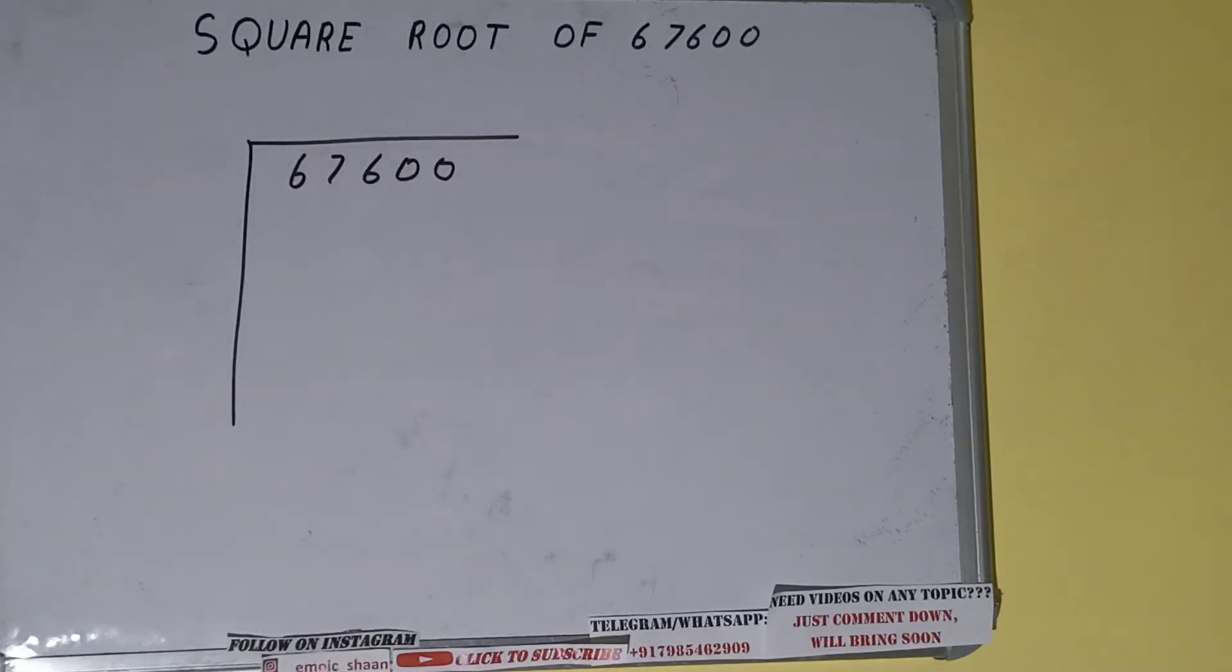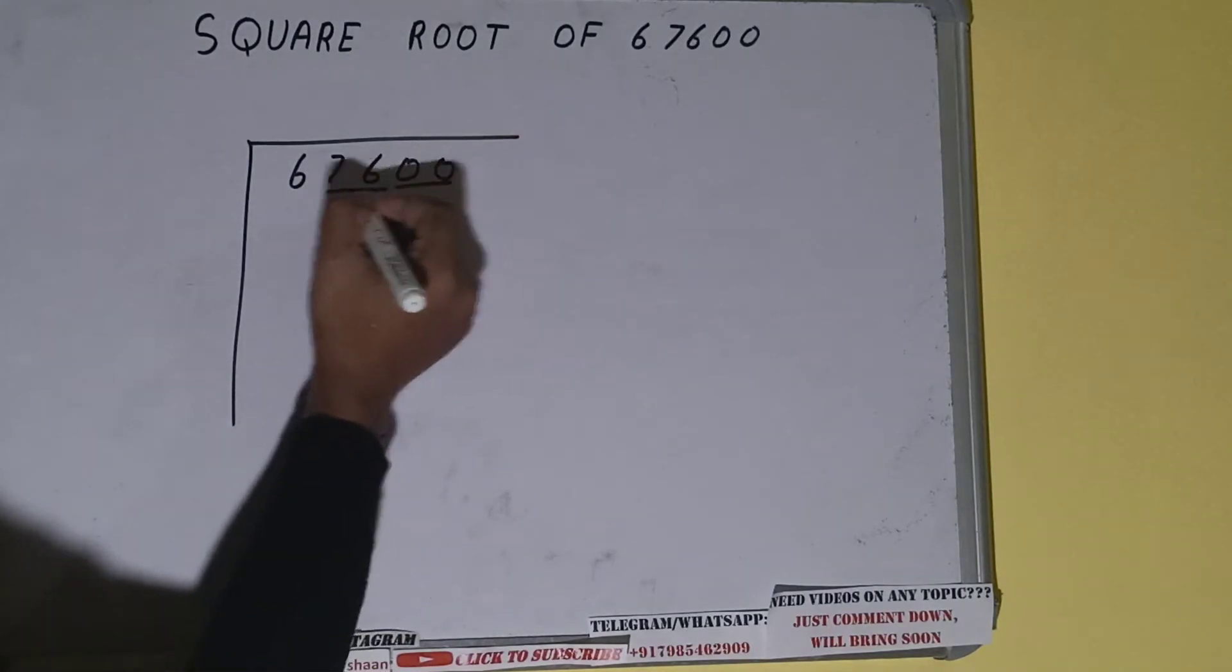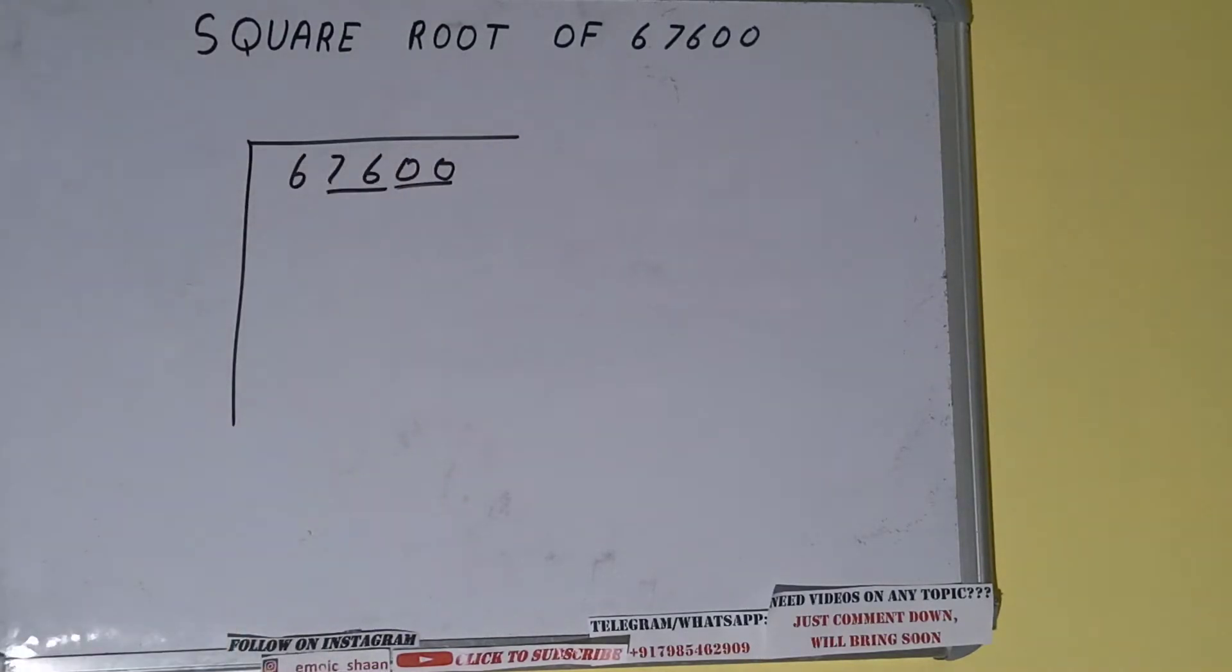The next thing we need to do is form pairs from the right-hand side. So one pair will be this, one pair will be this, and this six will be left out. So first we'll write this six and then we'll bring down the pairs.